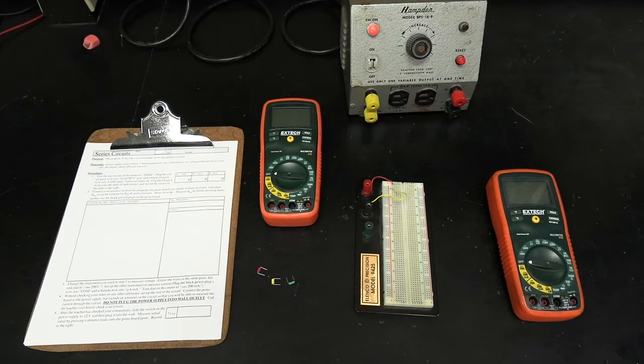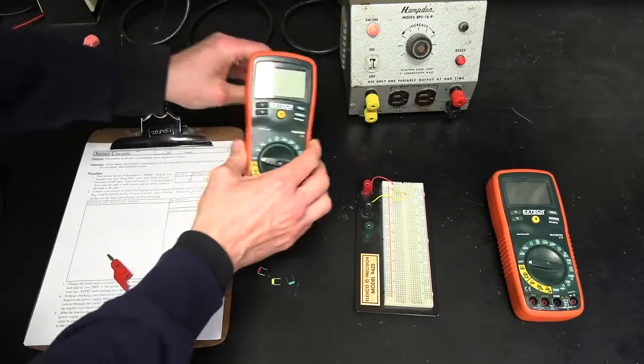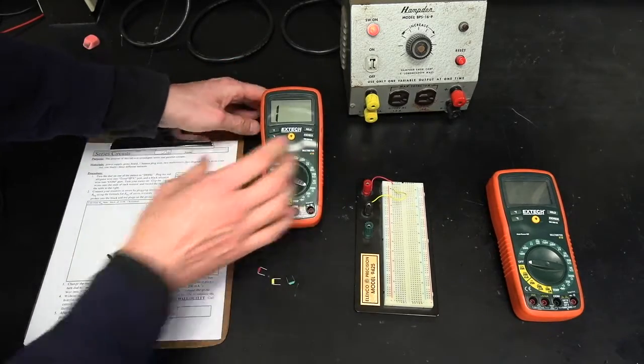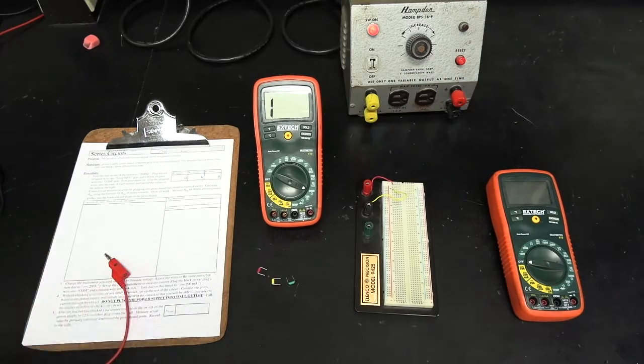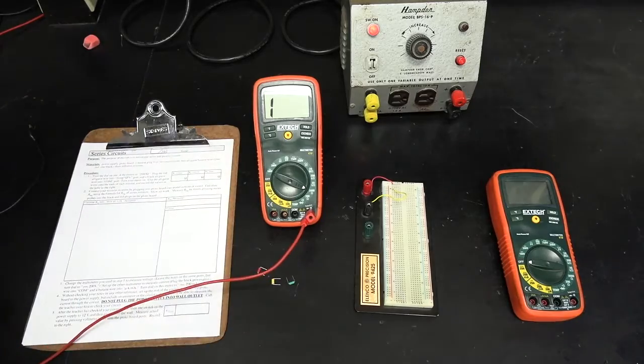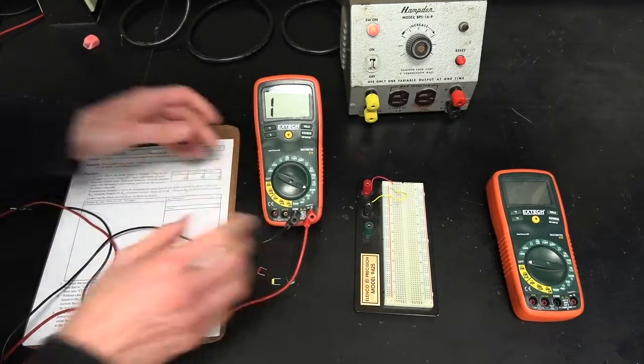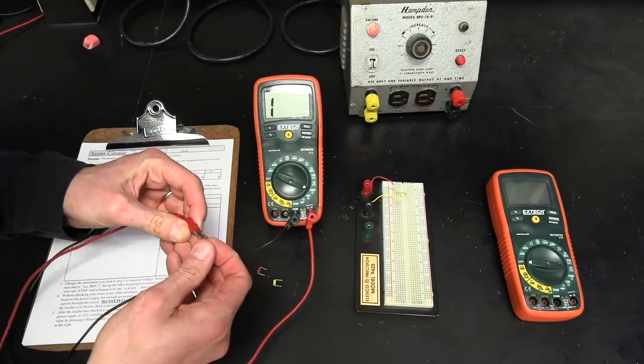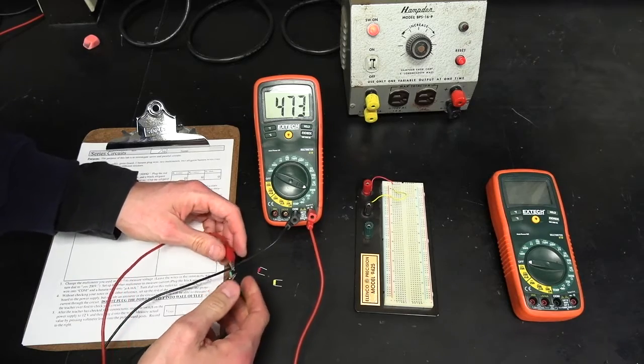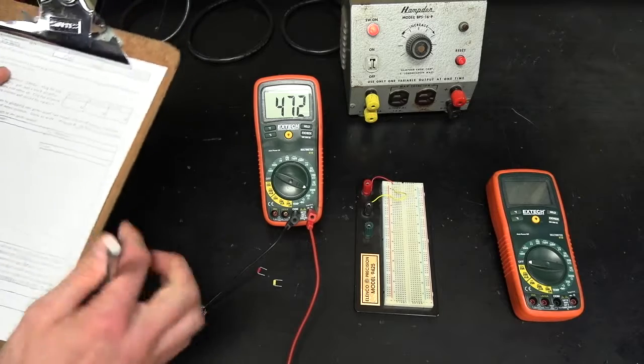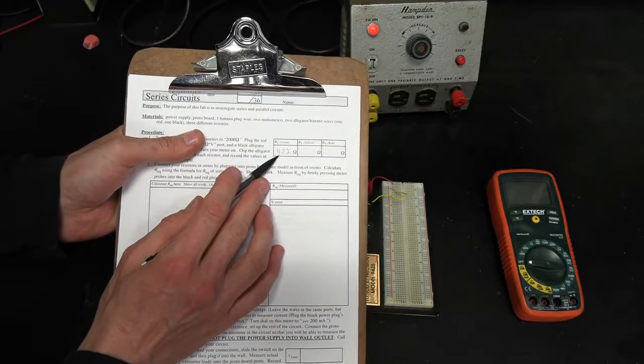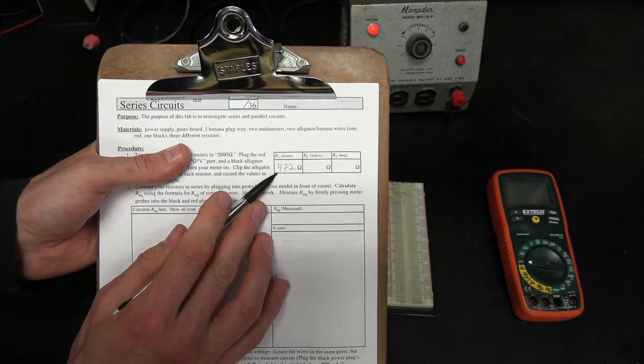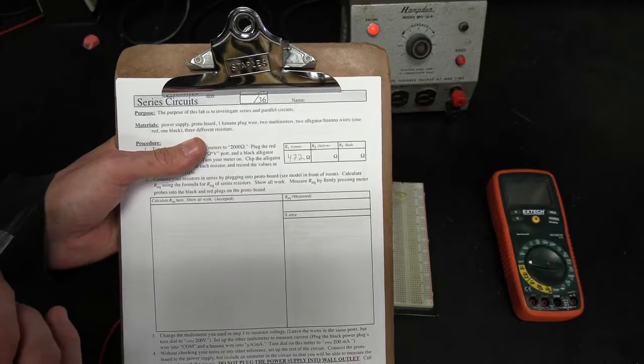As in the parallel circuits lab we have to begin by first measuring the resistances of our three resistors. So I'm going to configure this meter to measure ohms and thereby making it an ohm meter by turning this to 2,000 ohms. Okay that's reasonably visible, a bit of a glare but best I can do. So I turn this to 2,000 ohms, I plug one wire into temp ohm volts and the other one into comm and then I simply clip the alligator leads on either side of the three resistors. So here's the green one, 472 ohms, so I'll write that down on my datasheet.